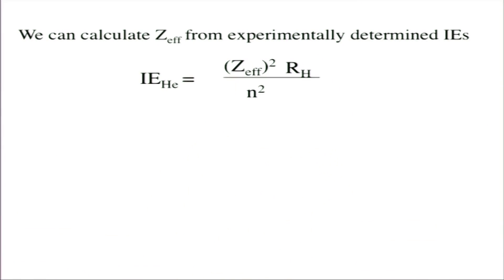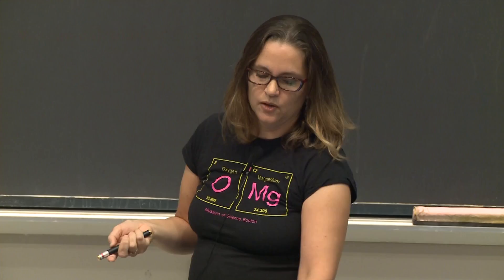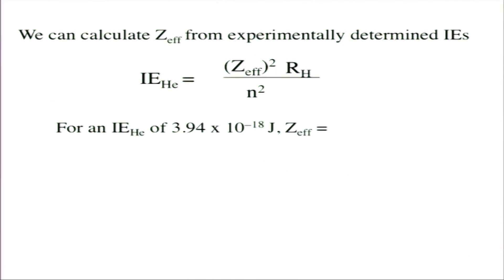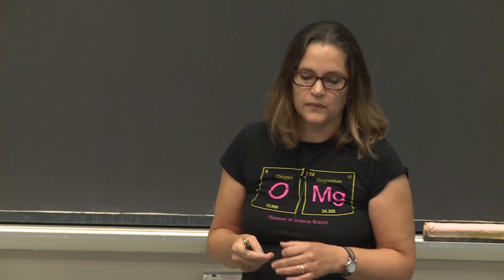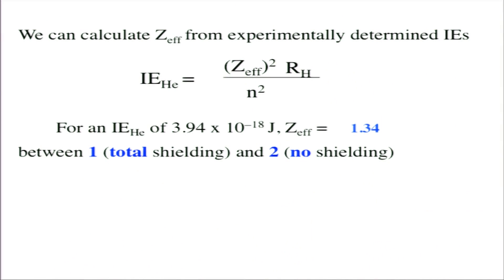We can calculate what z-effective actually is if we know the ionization energy: if you know the ionization energy you can calculate z-effective, or if given a z-effective you can calculate the ionization energy. With the measured value of 3.94 times 10 to the minus 18 joules, the z-effective works out to 1.34 — in between the two extremes of 1 (total shielding) and 2 (no shielding).